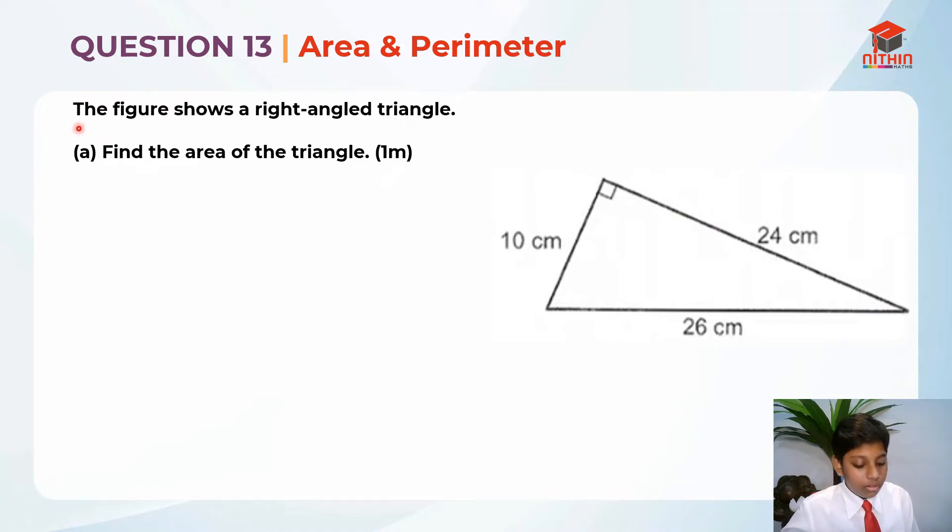So they have asked us to find the area of the triangle. The figure shows the right angle triangle. So they are asking us to find the area of the right angle triangle. So we need to know the formula of finding the area of triangle. Area of triangle is equal to half times base times height.